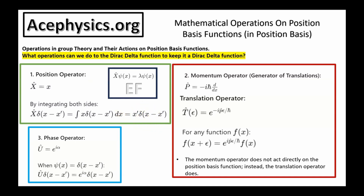Another operation you can do is multiply the function by a phase: u equals e to the i alpha. If I multiply the Dirac delta function by e to the i alpha, it applies a phase to it. This is relatively trivial because everything is an eigenfunction of the phase operator. Another operation in quantum mechanics is the momentum operator, which is minus i h-bar d by dx. The momentum operator is not directly applied to position eigenfunctions; instead, it must be exponentiated to transform from a Hermitian operator to a unitary operator. The exponential of the momentum operator serves as the generator of position translation.